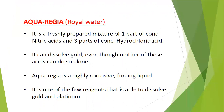Aqua regia is a mixture of hydrochloric acid and nitric acid — one part nitric acid mixed with three parts hydrochloric acid. It is a fuming liquid, meaning gas continuously comes out of it, because nitric acid is a strong oxidizing agent and continuously decomposes on contact with atmospheric gases. Aqua regia is a highly corrosive liquid that can dissolve metals like gold and platinum.